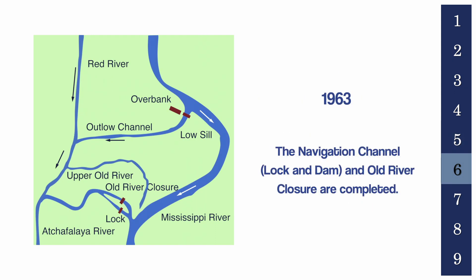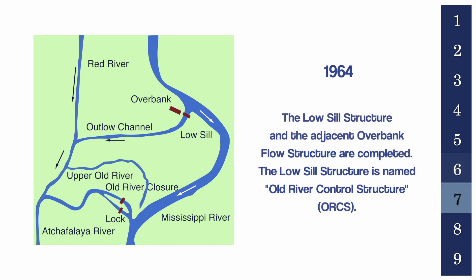In 1963, the navigation channel, lock and dam, and Old River closure were completed. In 1964, the low sill structure and the adjacent overbank flow structure were completed. The low sill structure was named the Old River Control Structure, or ORCS.